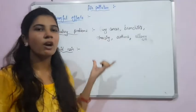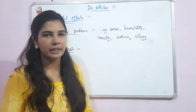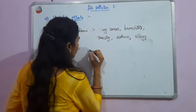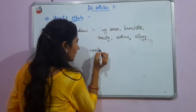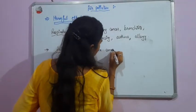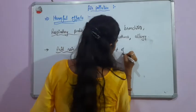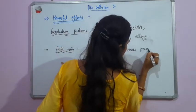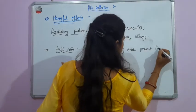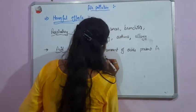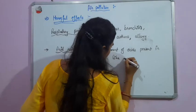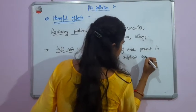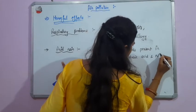If an excessive amount of acids is present in rain, then we call it acid rain. Acids present in acid rain include sulfuric acid and nitric acid.